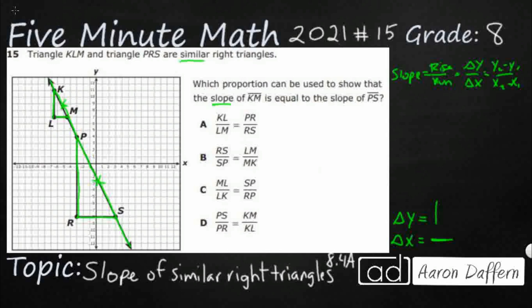So KL is a vertical line. So that's my change in Y. LM is horizontal. That is my change in X. That looks good. That's both in the small triangle.